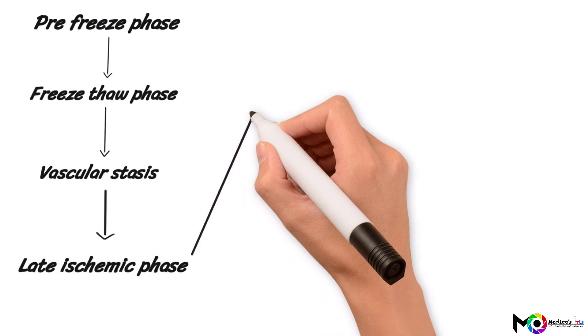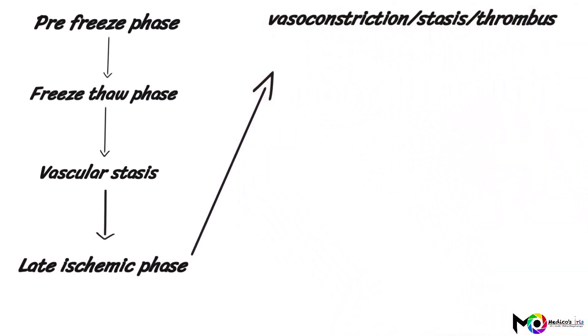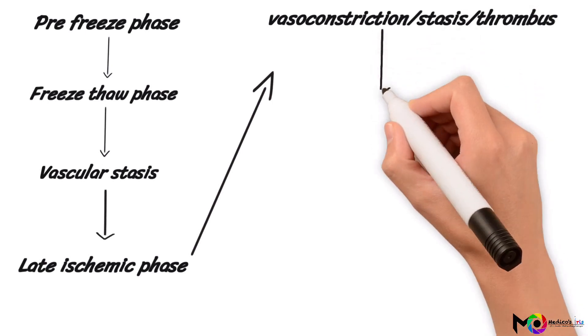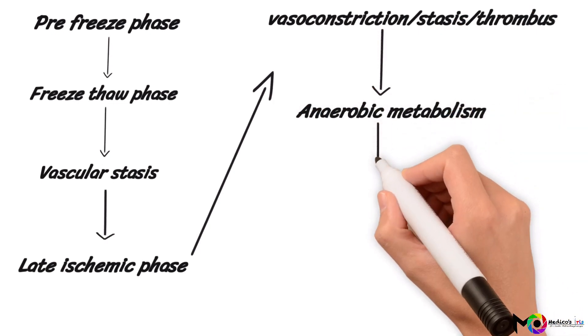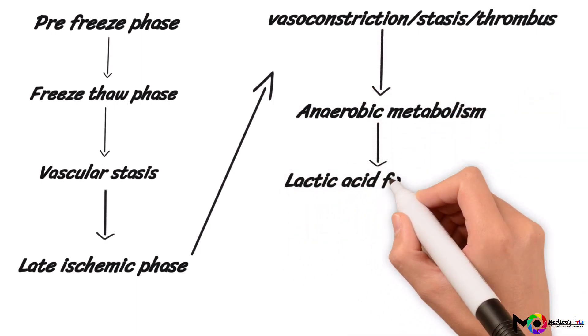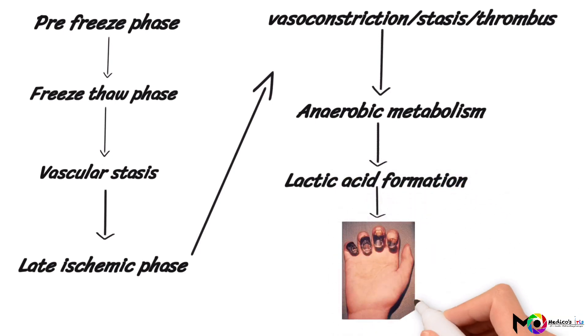Finally, the late ischemic phase sets in. This phase starts with vasoconstriction, which leads to stasis of blood, finally leading to thrombus formation. Hence, blood supply reduces to the peripheries. Due to decreased blood supply to tissues, anaerobic metabolism starts, which leads to lactic acid formation. If this vicious cycle continues, the cells die and tissue necrosis sets in.